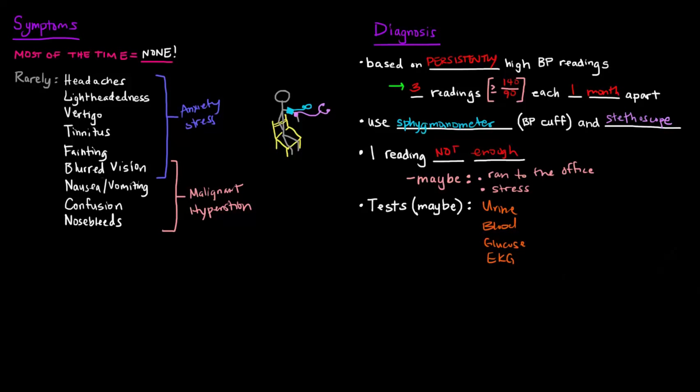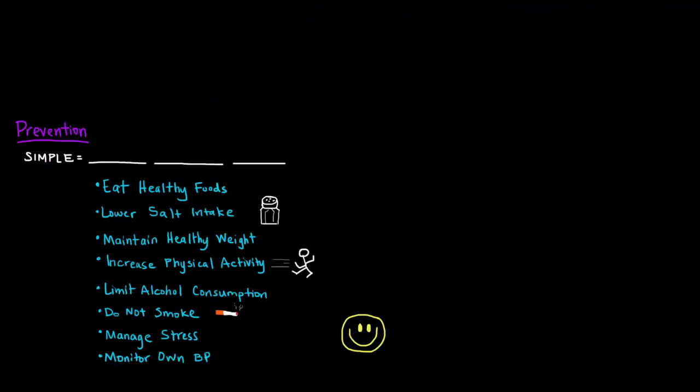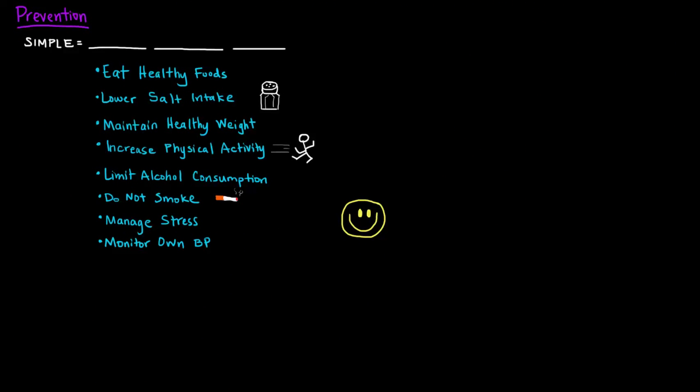So how do we prevent hypertension? How do we prevent this bad thing? It's actually pretty simple. All we have to do is make healthy lifestyle choices. And this, of course, includes eating healthy foods. So those healthy foods, things like fruits and veggies and whole grains and lean meats, low-fat dairy, basically less sugar, fat, and salt, which brings me to my next point here, lower salt intake. So a lower salt intake can greatly help with reducing the risk for high blood pressure.